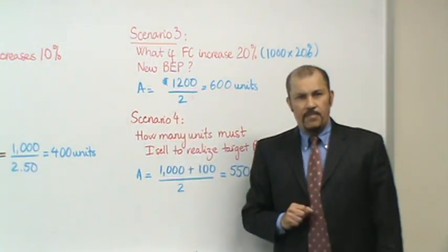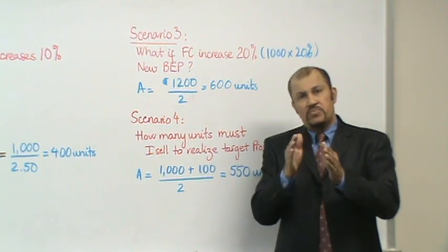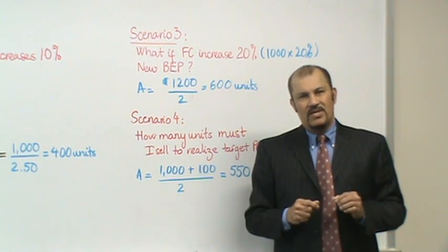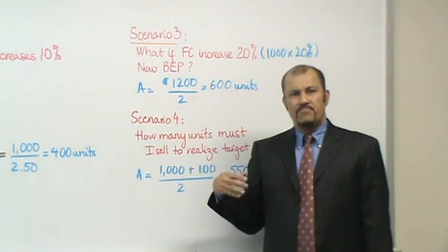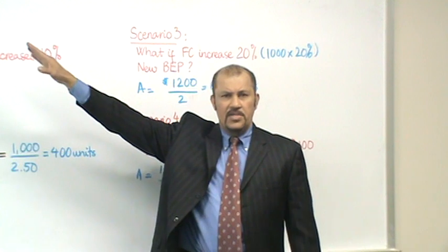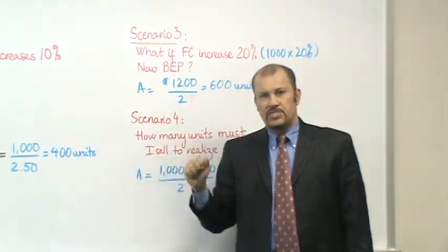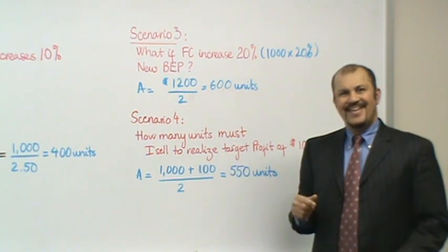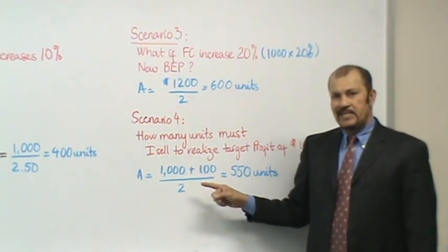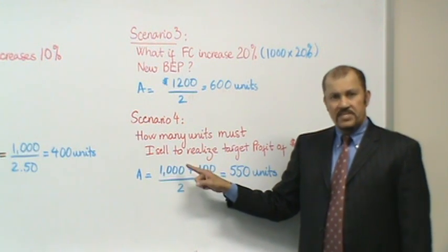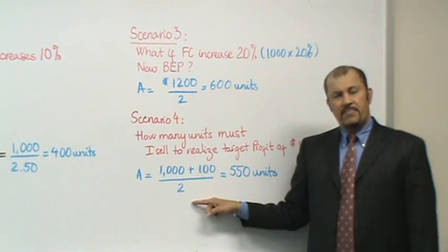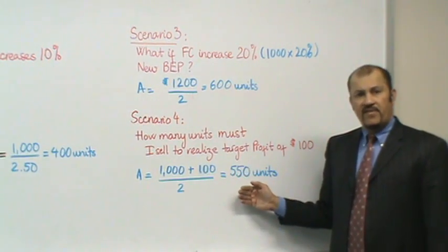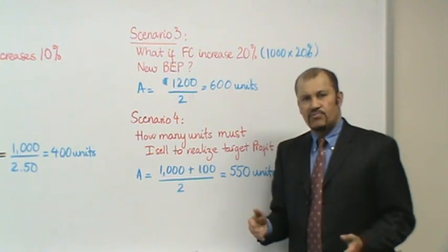Okay. Let's look at another variation. Scenario number four. In scenario number four, I am not satisfied with just breaking even. I want to realize a profit. So my question is, yes, I'm ambitious, I do want to make some money. My question then is, how many units must I sell if I want to realize a target profit of $100? Given the original data of $5.00 selling price, $3.00 variable cost, $1,000 rent, how many units must I sell to realize a target profit of $100? So in this case, to do the calculation, I'm going to modify the break-even formula slightly, where on the numerator, I take the fixed cost as before, but this time I add my target profit of $100 in the numerator, and then I divide that by the contribution margin of $2.00. So under this scenario, the number of units that I need to sell would be 550 units in order to realize my ambition of a profit of $100.